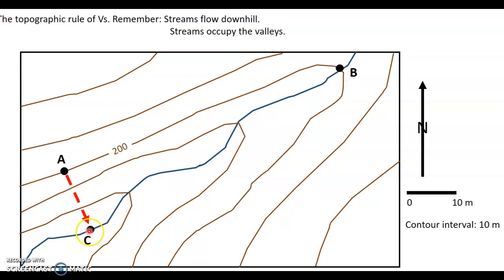So if you're standing at point C looking uphill at point A, you're going to be looking uphill. Or if you're looking towards your buddy who you left at point B here, you're going to be looking upstream or uphill. So point B is at a higher elevation than point C. So therefore, these contour lines make a V that points in the upstream direction.